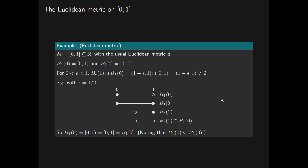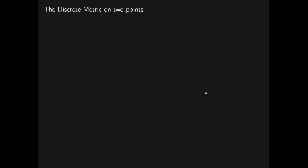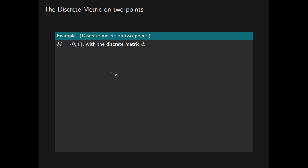We are going to establish in the next example that this does not always hold — it is not always true that the closure of an open ball is its corresponding closed ball. We will see this using the discrete metric on two points. Let M denote the two-point set {0, 1} with the discrete metric d.